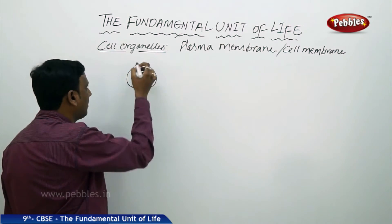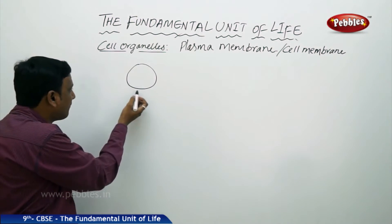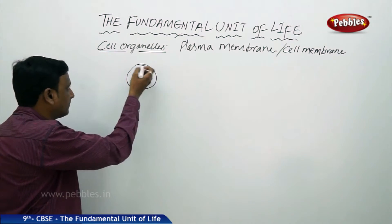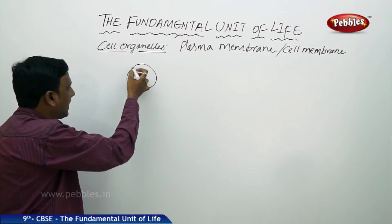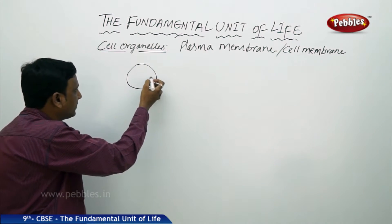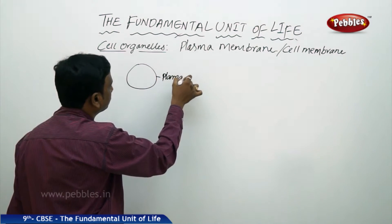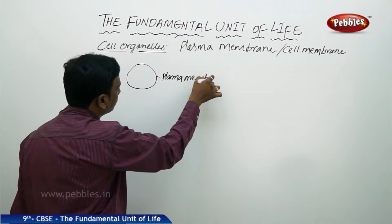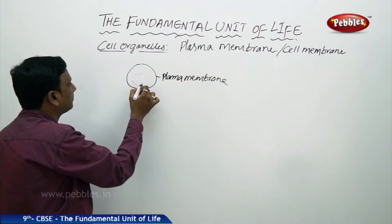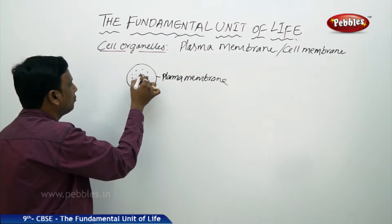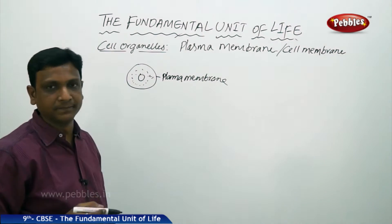You are able to identify a cell by identifying its border. This outermost covering is the plasma membrane. All the constituents — the jelly-like cytoplasm, nucleus, and other cell organelles — are enclosed by this cover, the plasma membrane.